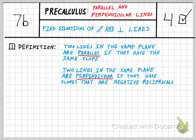If two lines in the same plane are parallel, that means they have the same slope. If two lines in the same plane are perpendicular, their slopes are negative reciprocals. In case you forgot what negative reciprocals are,